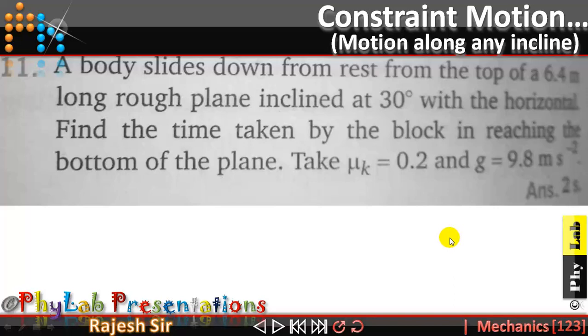Today I am discussing with you a numerical problem from Motion Physics from the chapter Friction. The question says a body slides down from rest from the top of a 6.4 meter long rough plane inclined at 30 degrees with the horizontal, and they want us to find the time taken by the block in reaching the bottom of the plane.